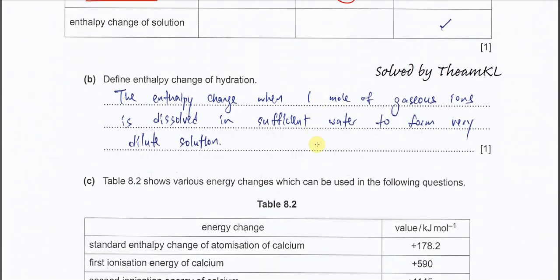Part B: define the enthalpy change of hydration. This one is very easy. The enthalpy change when one mole of gaseous ion dissolves in a sufficient amount of water to form a very dilute solution. Note the conditions — it must be one mole of gaseous ion. This gaseous ion can be a cation or anion. As long as one mole dissolves in a large amount of water, we call this the enthalpy change of hydration.